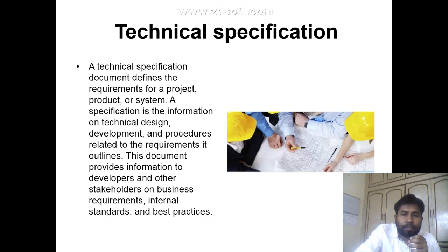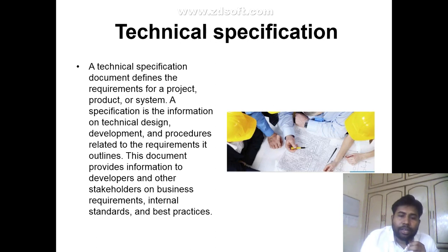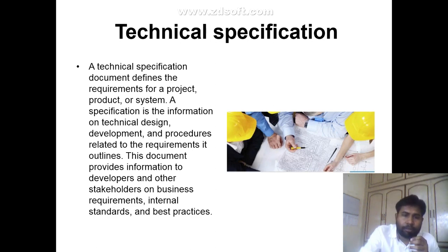The second document is technical specifications. A technical specifications document defines requirements for a project, procedure, system, or service, providing information on technical design and development related to requirements. This document provides information to developers and other stakeholders on business requirements, internal standards and best practices. This format is in PPT.